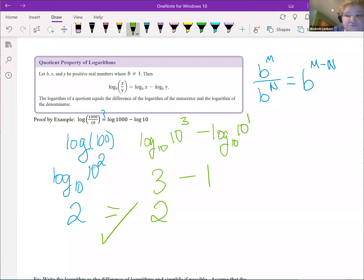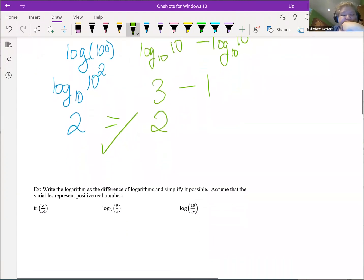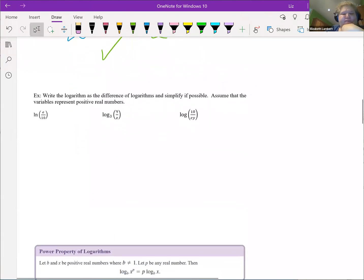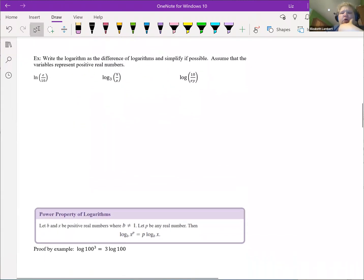All right, so now I know if I'm taking the log of a fraction, I can break that into a set of differences or subtractions. But they like to use the fancy words so they'll say do this as a term of sums and differences. So here we go: write the logarithm as the difference of logarithms and simplify if possible. Assume that the variables represent positive real numbers.